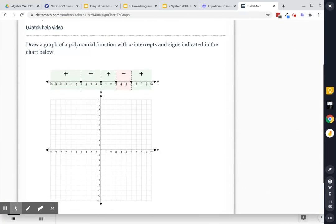Draw a graph of a polynomial function with x-intercepts and signs indicated in the chart below. So here's what this tells me so far. The first thing it tells me is positive. Anywhere it's positive, we are above the x-axis. These zeros are right on the x-axis, and then a negative is below.